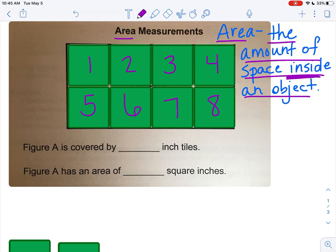So this was Figure A. Let's answer this question. Figure A is covered by blank inch tiles. How many tiles did we have? Yes. We talked about they were inch tiles. When you're talking about area, you measure it in square inches. So it says Figure A has an area of blank square inches. How many square inches did it take for us to fill up that rectangle? You got it. Eight.